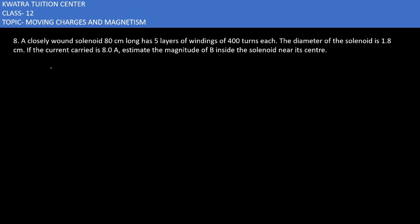The 8th problem says: a closely wound solenoid 80 cm long has 5 layers of windings of 400 turns each. The diameter of the solenoid is 1.8 cm. If the current carried is 8 ampere, estimate the magnitude of B inside the solenoid near its center.